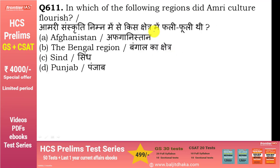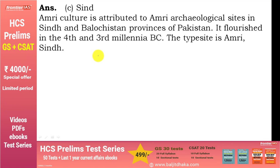In which of the following regions did Amri culture flourish? Amri संस्कृति Sindh और Balochistan provinces में flourish हुई। इसका period था 4th और 3rd century BC। इसका type site है Amri, Sindh। Type site वह होता है जहाँ से आप उस civilization को describe करते हैं।